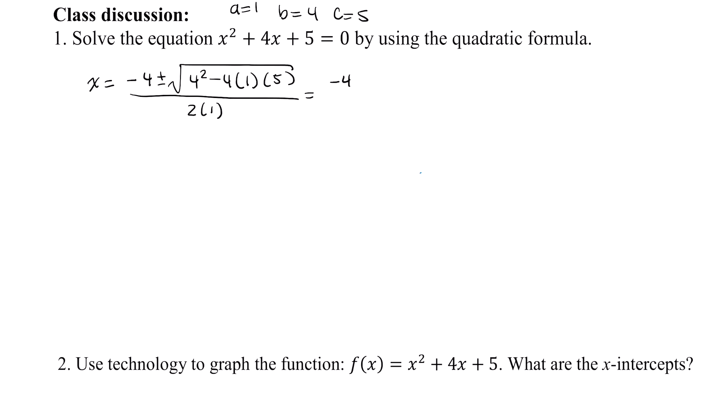This simplifies to negative 4, plus or minus, and then inside our radical, we end up with negative 4, and divide all of this by 2. So the question is, what number multiplied by itself gives you negative 4?